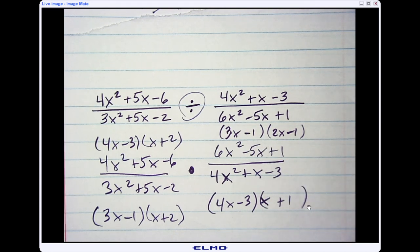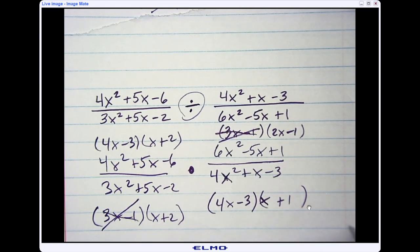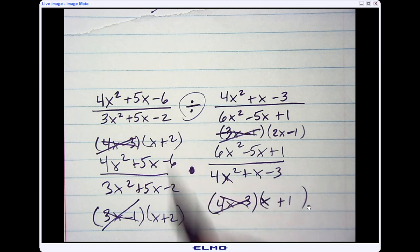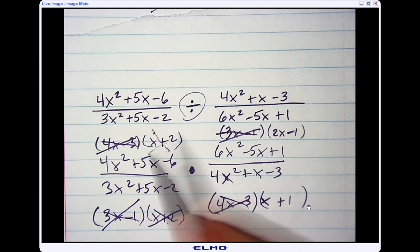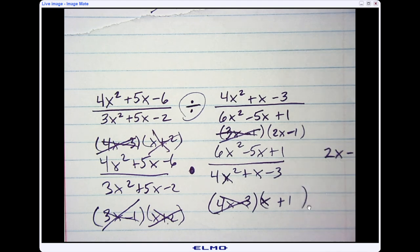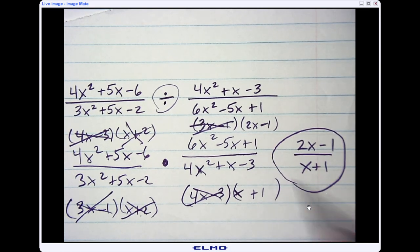And then I'll do the same thing, what they have in common. So there's a 3x minus 1 and a 3x minus 1, so those would cross out and make a 1. I have a 4x minus 3 and a 4x minus 3. And right here I have x plus 2 and an x plus 2 on the top and bottom. So all I have left is I have 2x minus 1 over x plus 1, and that would be my answer.